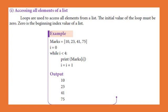For the first method, loops are used to access all elements from your list. The initial value of the loop must be zero, as zero is the beginning index value of your list. Elements are stored as: first element at index zero, second element at index one, and third element at index two.